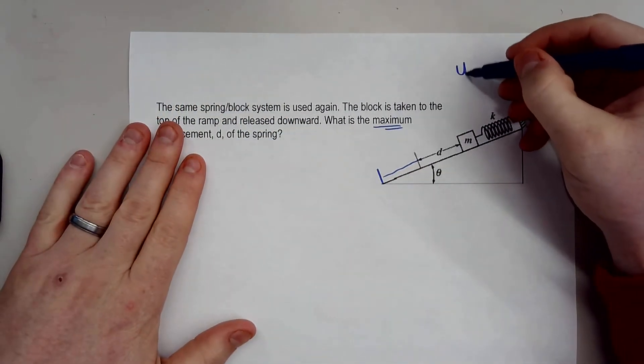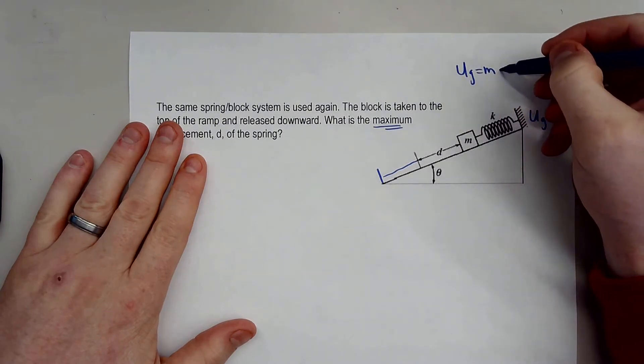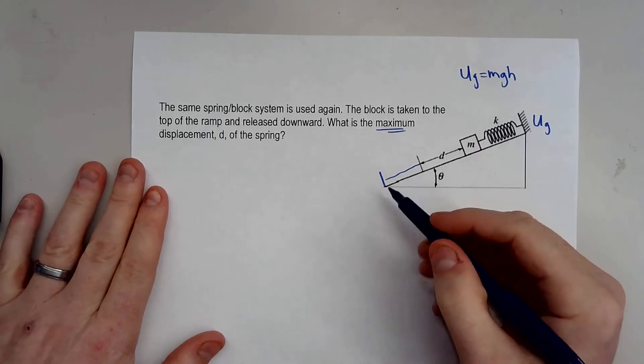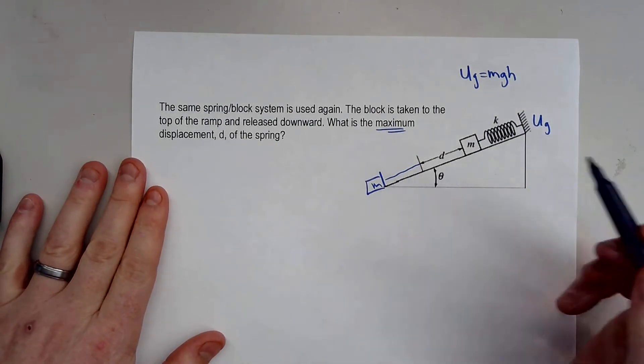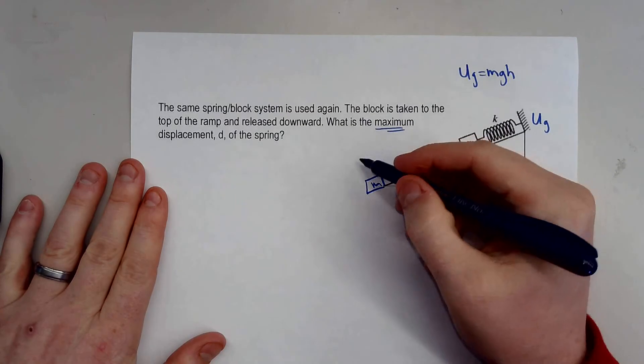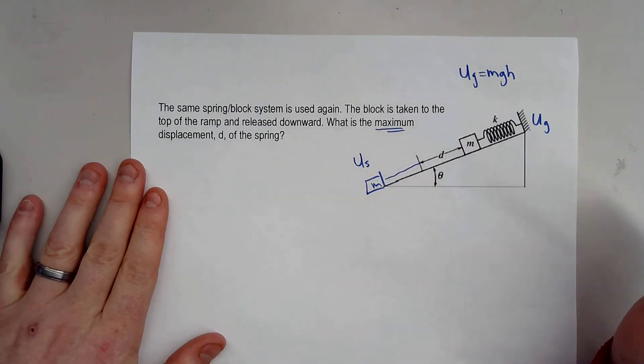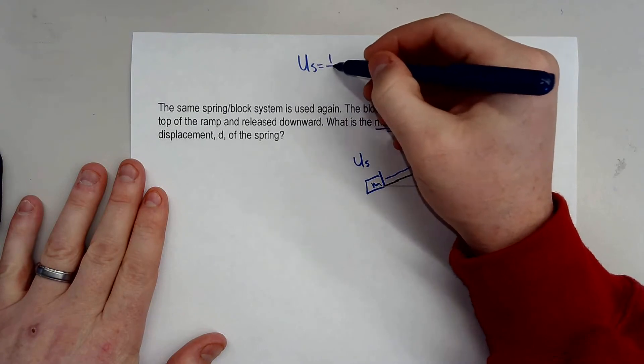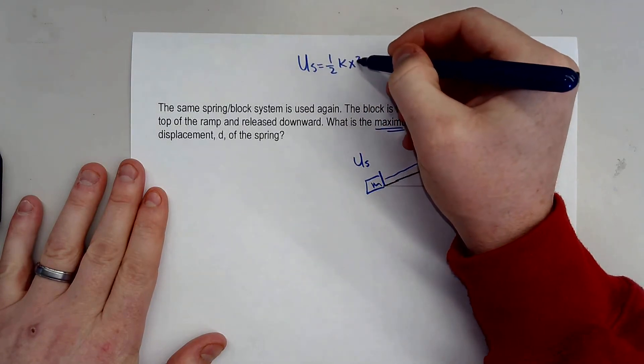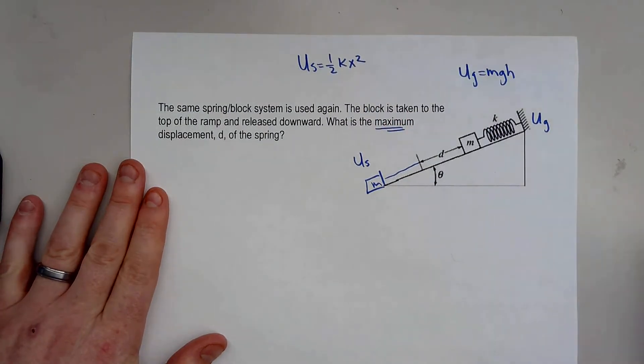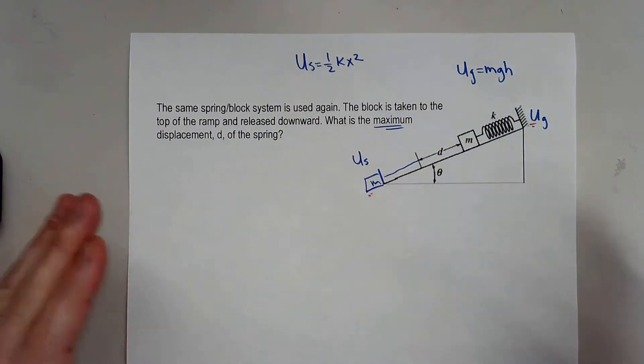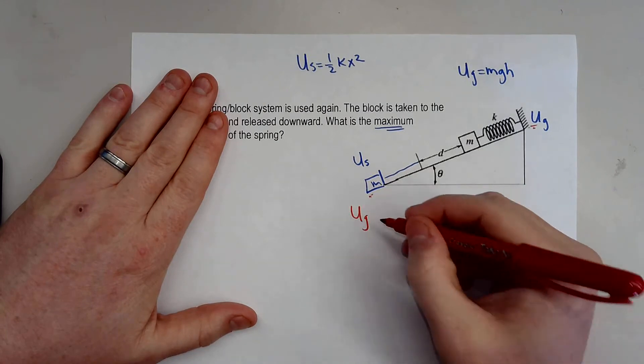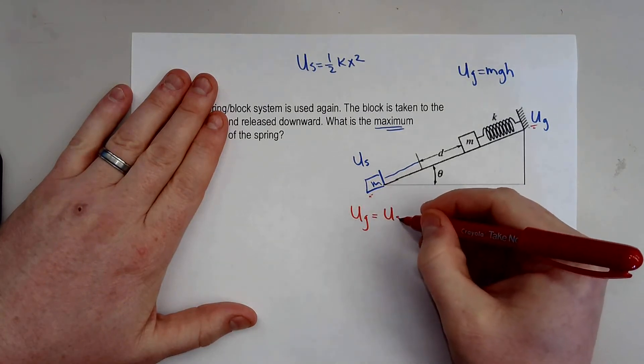which is going to be mass times gravity times height. And at the very very bottom, so as this block reaches the bottom, all of this energy has been transferred into what we call the energy of a spring. So potential energy of spring. And that is equal to one half k x squared. So if we know the energy here and here we can set these two situations equal to each other.